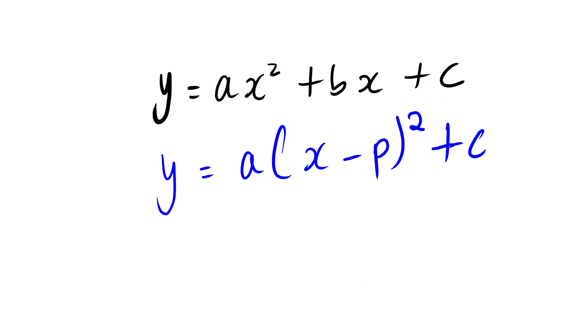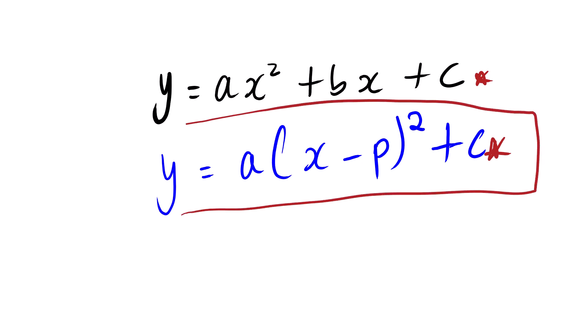We have two general equations. Both of these equations are quadratic equations, but the manner in which they are written is different. We have this manner — you can see there's no bracket — and then we also have this one, which has a bracket form.